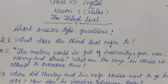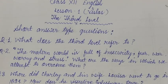Question number one: What does the third level refer to? The answer is, the third level was in fact a medium of escape for Charlie. Usually the underground railroads have only two levels, but Charlie, who was perhaps tense and worried, climbed down to the third level at the Grand Central Station. He had a feeling that he had travelled back to the year 1894. It was a journey in imagination.